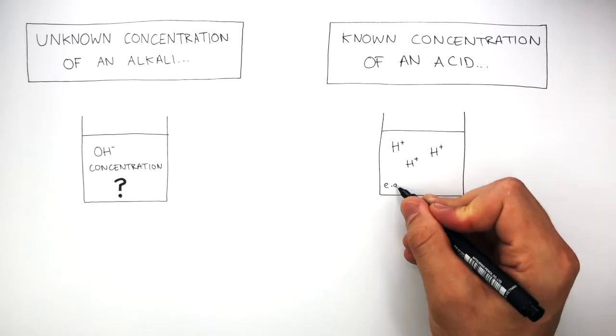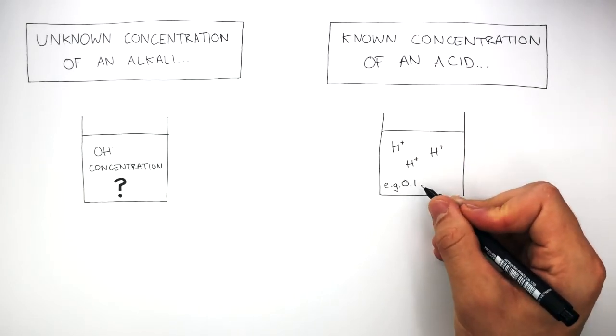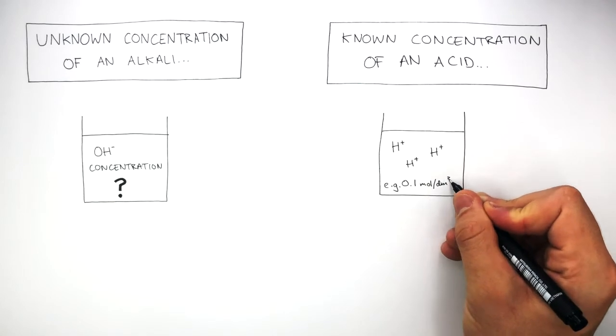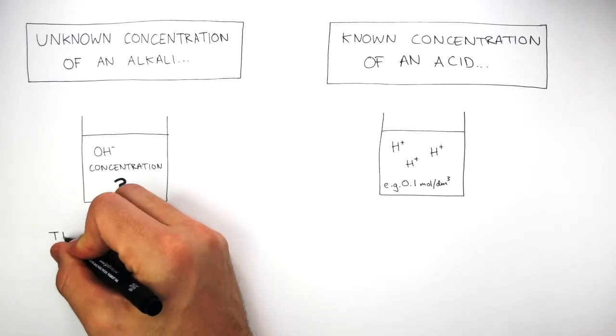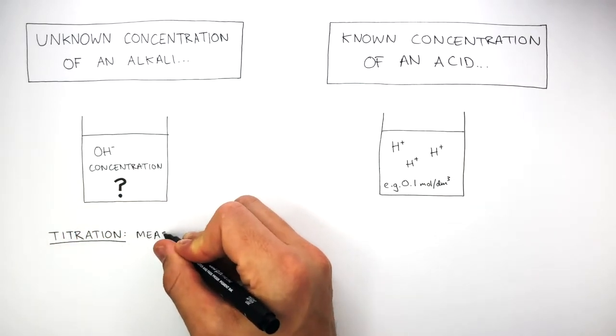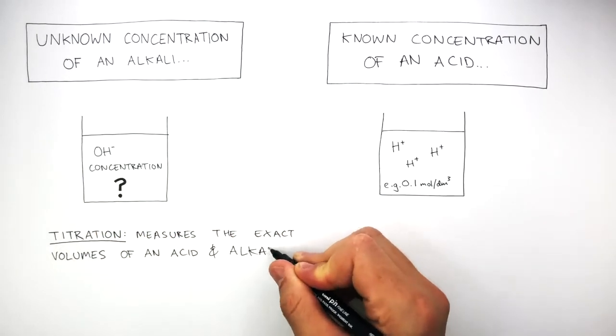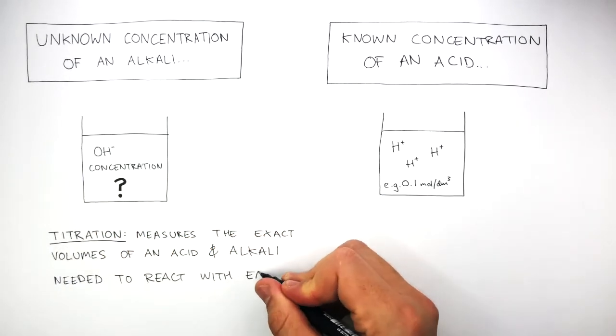For example, we know the concentration is 0.1 moles per decimetre cubed. So if we did a titration, a titration measures the exact volumes of an acid and an alkali needed to react with each other.